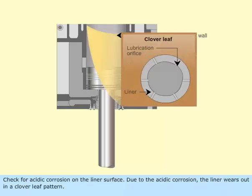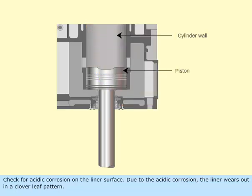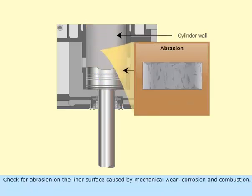Check for acidic corrosion on the liner surface. Due to acidic corrosion, the liner wears out in a cloverleaf pattern. Check for abrasion on the liner surface caused by mechanical wear, corrosion, and combustion.